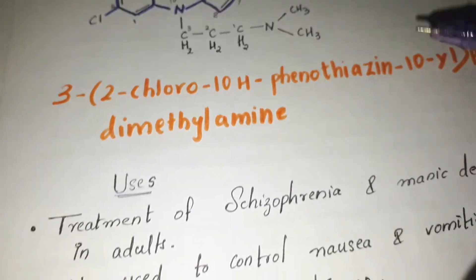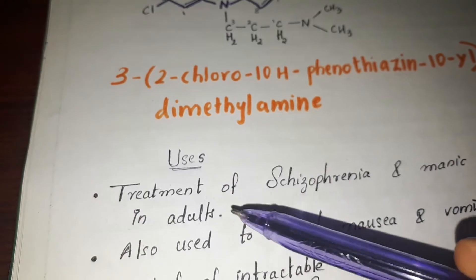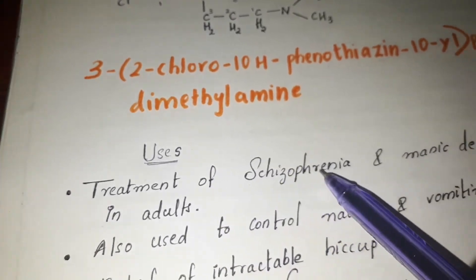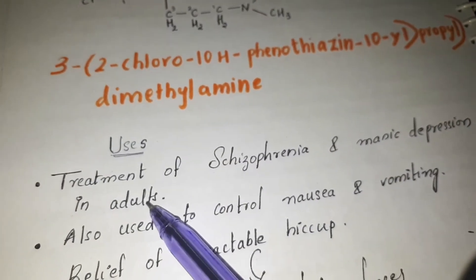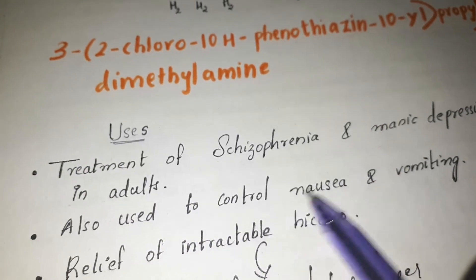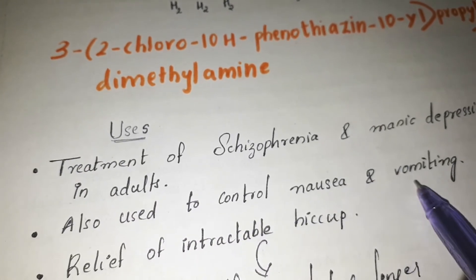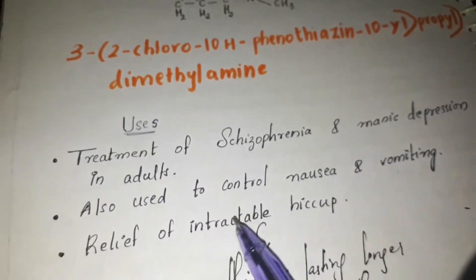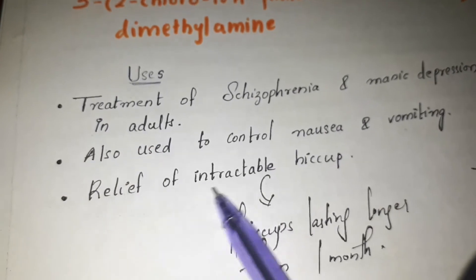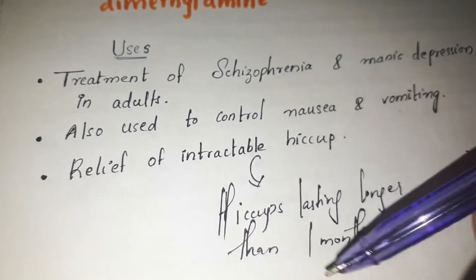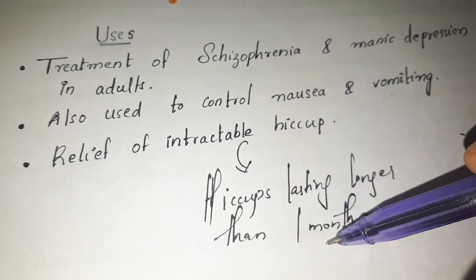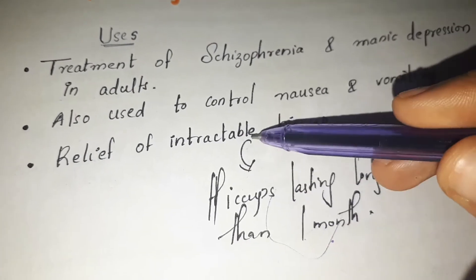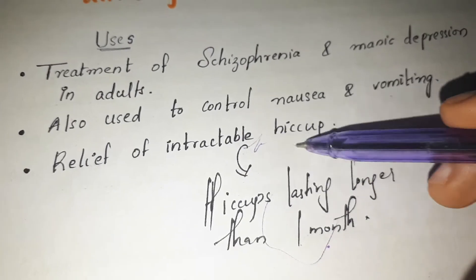The uses of chlorpromazine include treatment of schizophrenia and manic depression in adults. It is also used to control nausea and vomiting, and for relief of intractable hiccup — intractable referring to hiccups lasting longer than one month.